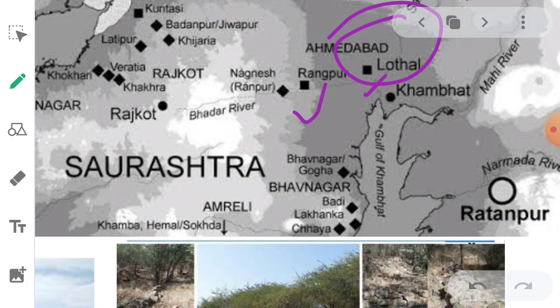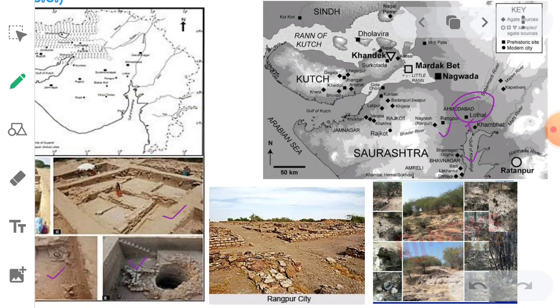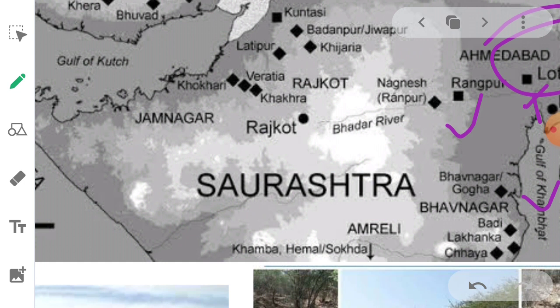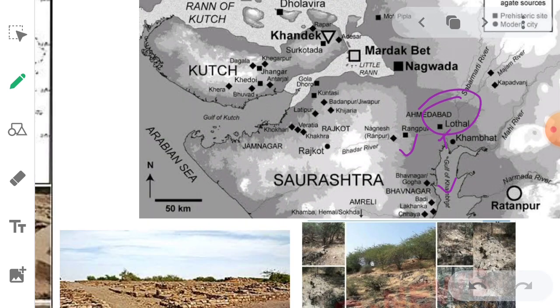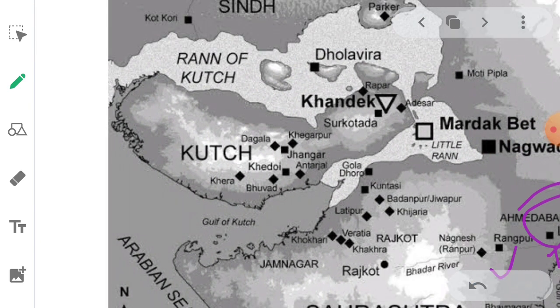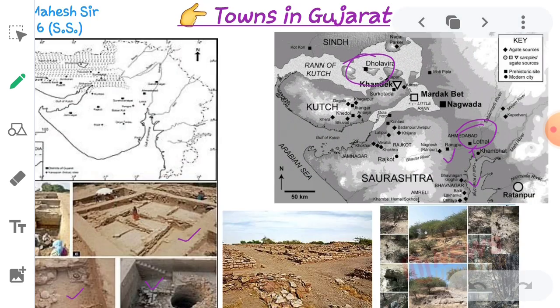The towns of Rangpur near Limbdi and Rojdi near Gondal in Saurashtra were also discovered. Dhesalpur and Dholavira in Kutch were also excavated. Dholavira was located in Kutch. These are the ancient towns of Gujarat.